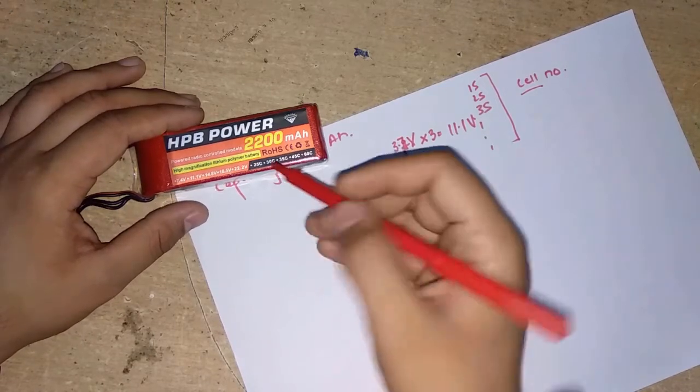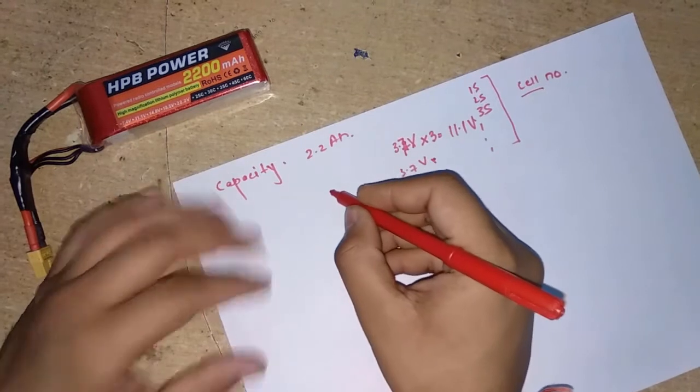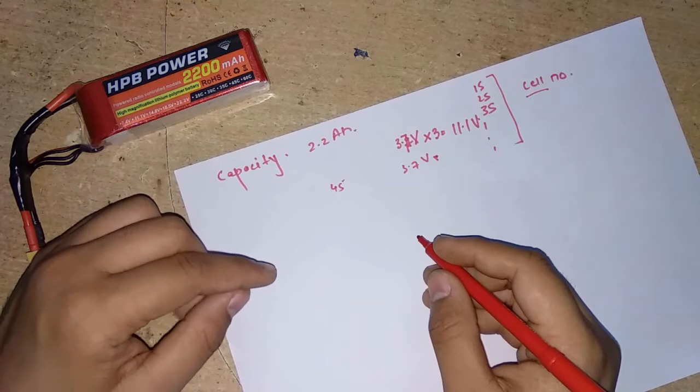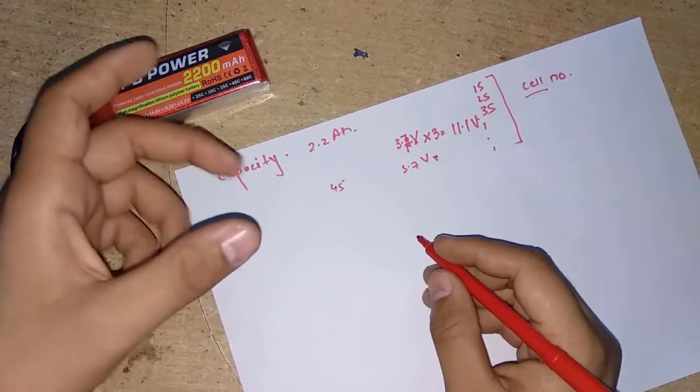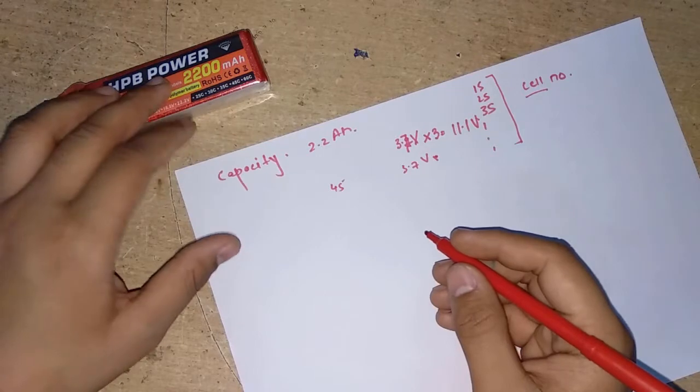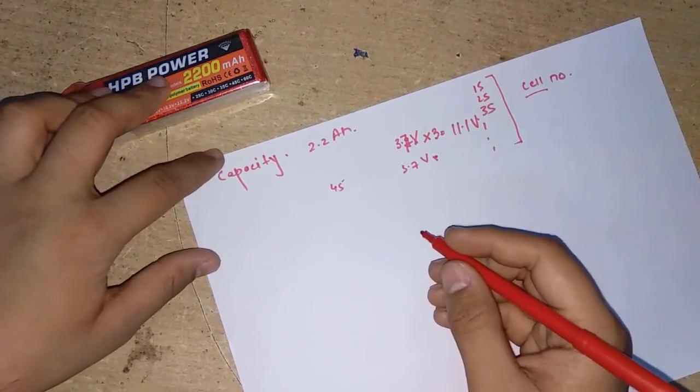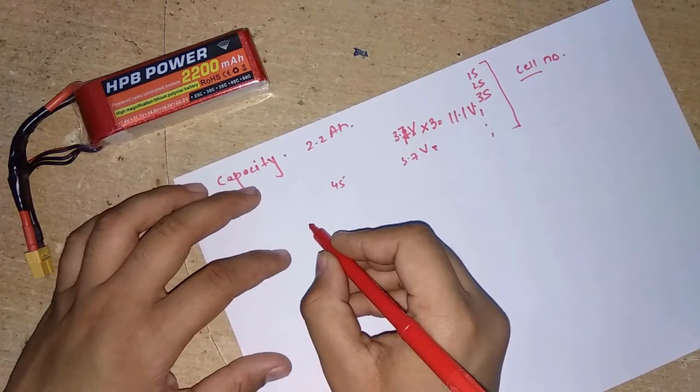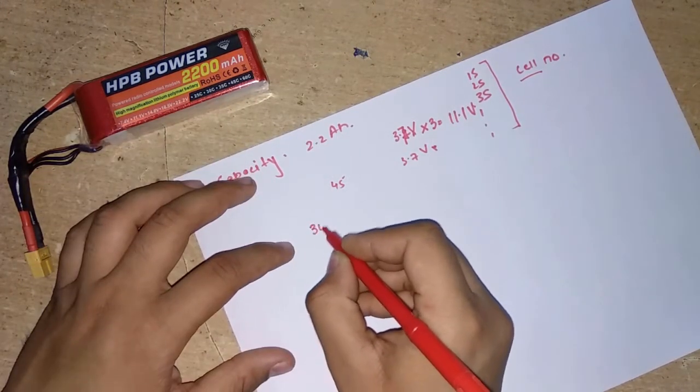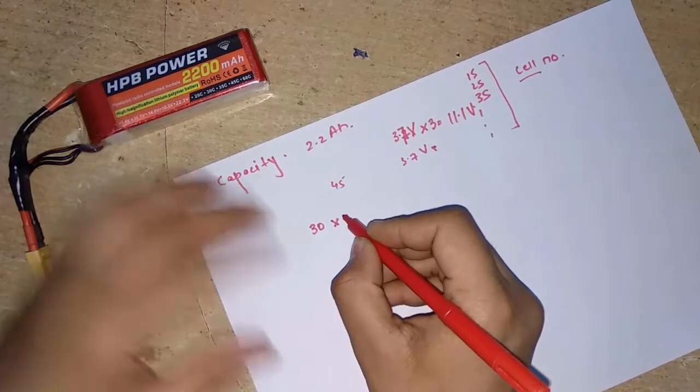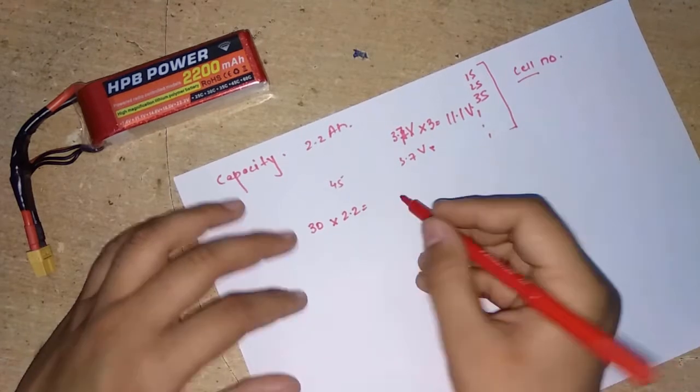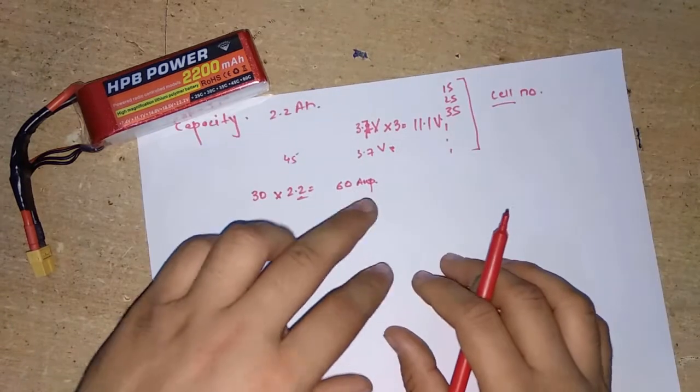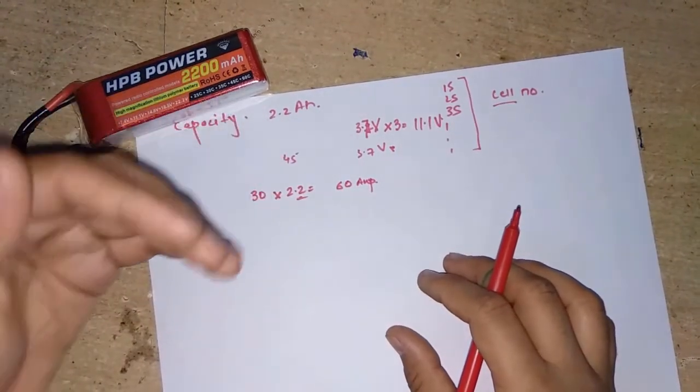This is a 30C battery, but you can have 45C or 60C in the case of Orange and Zippy. That number actually shows you how much current you can pull out of this battery without destroying it. How to calculate that is just multiply that C rating, which in this case is 30C, with your capacity, which is 2.2. This will give me around 60A.